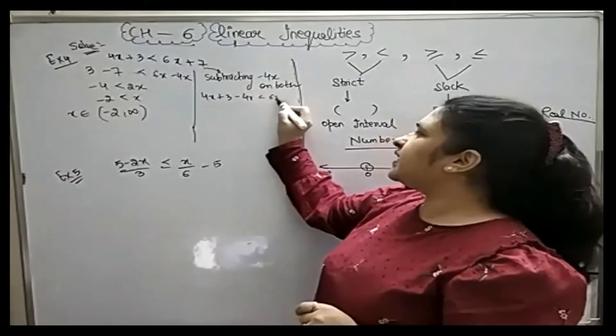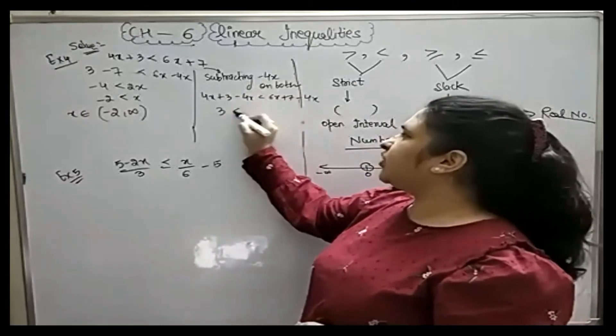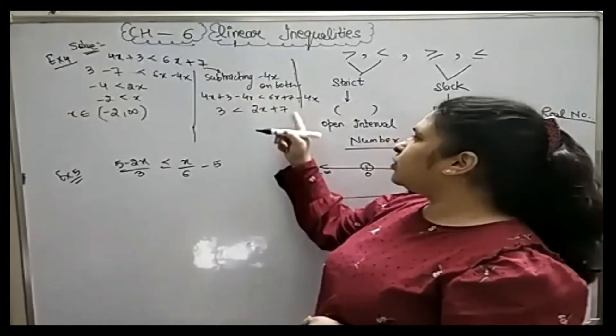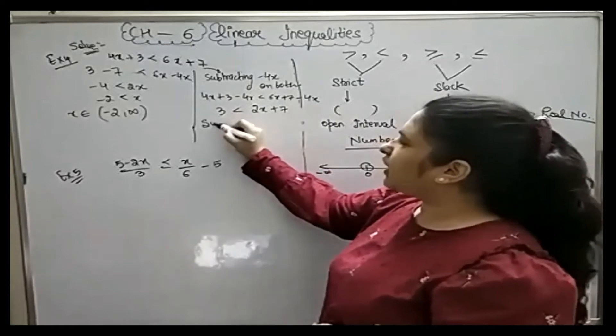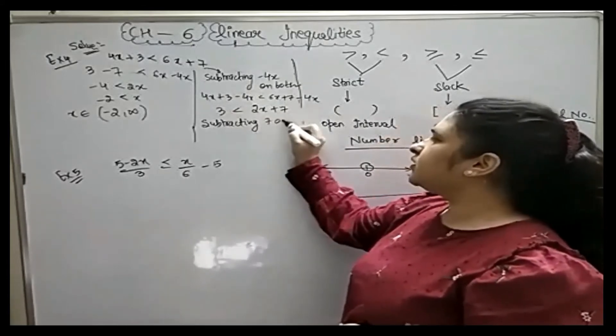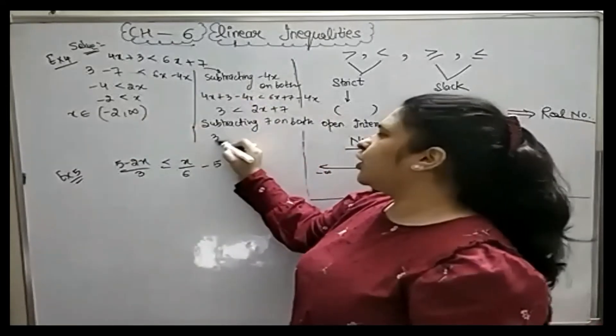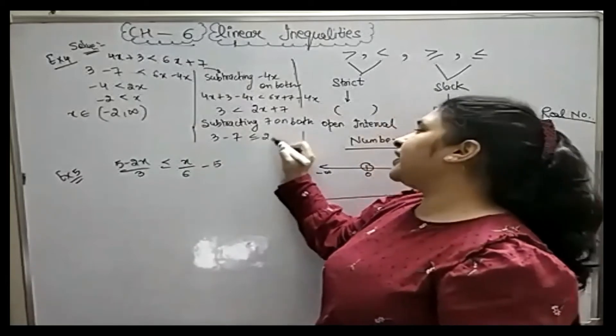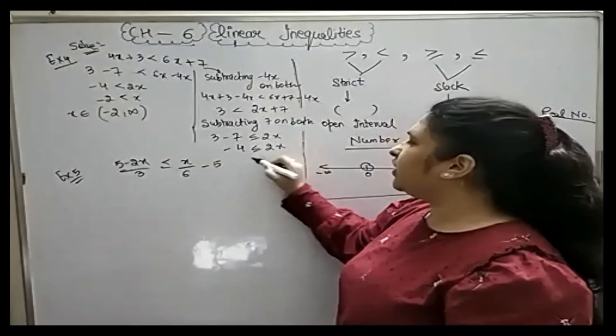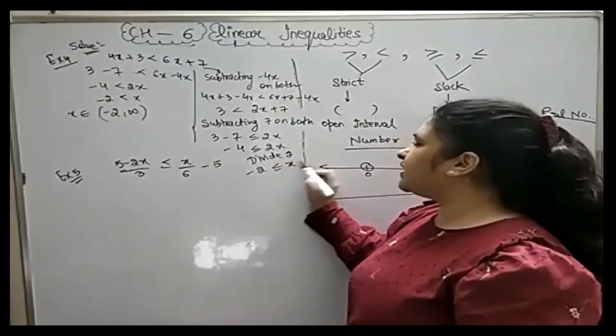So what will happen? Minus 4x less than 6x plus 7 minus 4x. So this will be 3 less than. What will happen? 2x plus 7. Now we will have 7 minus here. So what will we do? Subtracting 7 on both sides. Now actually I will tell you, so this is the way of writing. Some teachers say that we have written this. Now this step is divided by 2 on both sides. So this will be minus 2x less than equal.